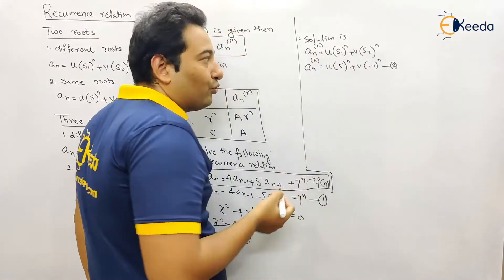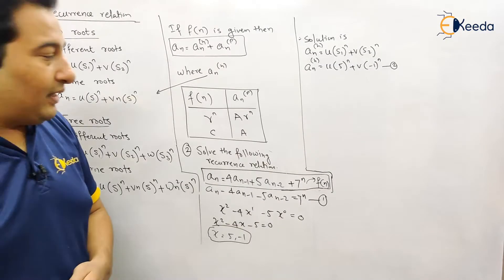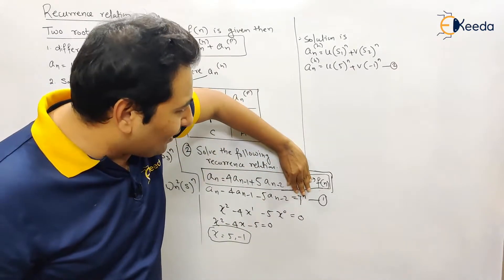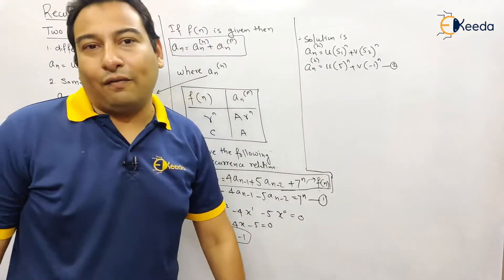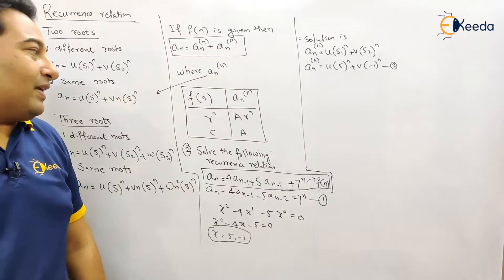Final solution will be a_nh plus a_np. If this is not given, this is my final solution, that is your a of n. Now we need to find out a_np.